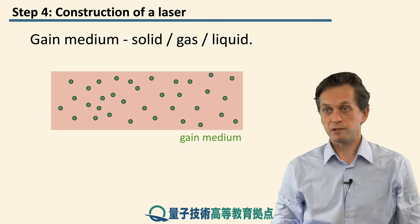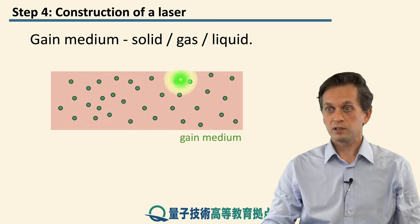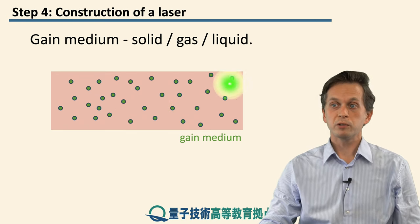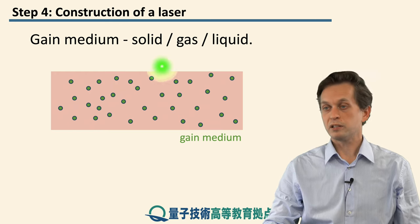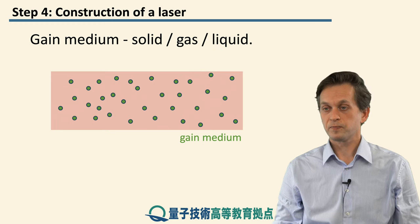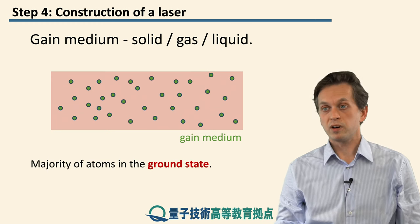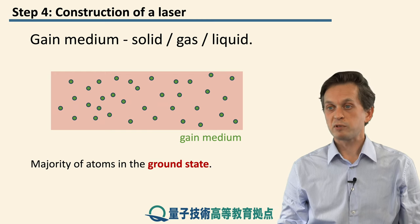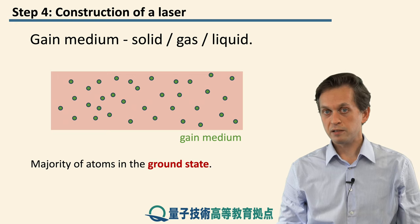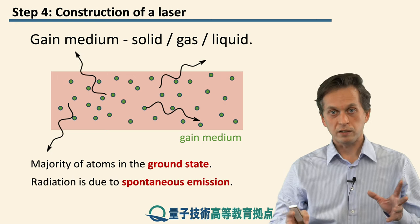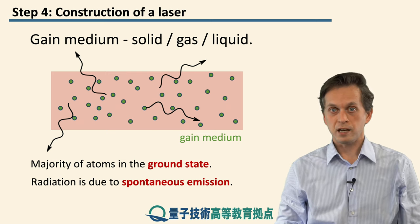Now let's start to build our laser. All of these dots represent our three-level atoms, and we're going to refer to this as a gain medium. The gain medium can be either solid, a gas, or a liquid. Without doing anything, most of the atoms are found in the ground state. Occasionally some of them get excited, and what happens is they decay via spontaneous emission, giving out light in all directions.